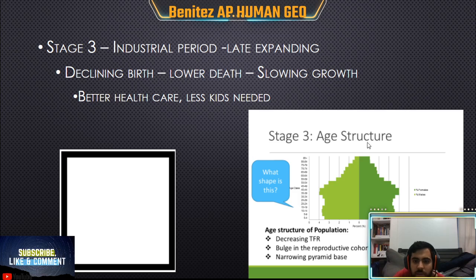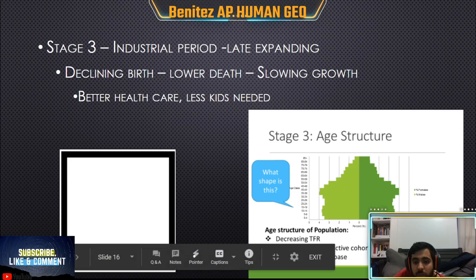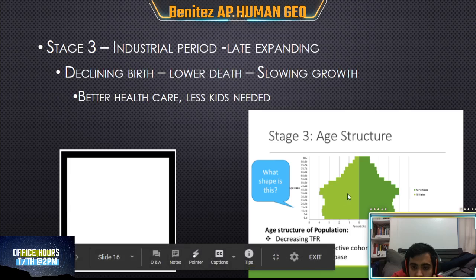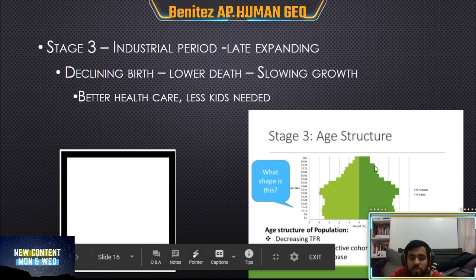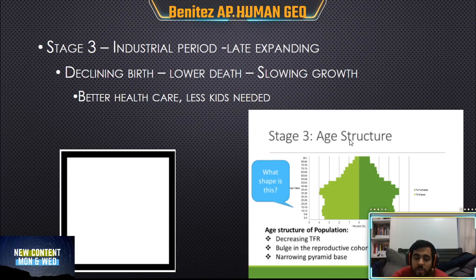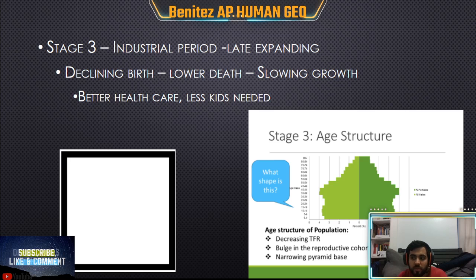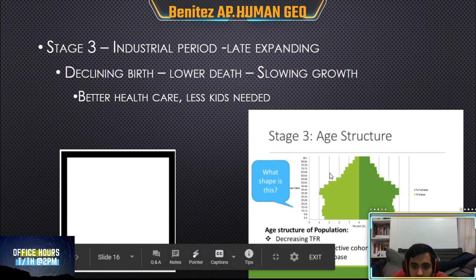In the bottom right corner, these are called population pyramids. This is the population pyramid for a stage three country. Population pyramids show how a population is growing. Anyone between 0 and 15 are kids; 16 to 64 are working adults; 65 and above are the elderly. People aged 0–15 and 65+ are dependents — they rely on being taken care of. The people in the middle, ages 16 to 64, are the ones working and keeping the economy going.